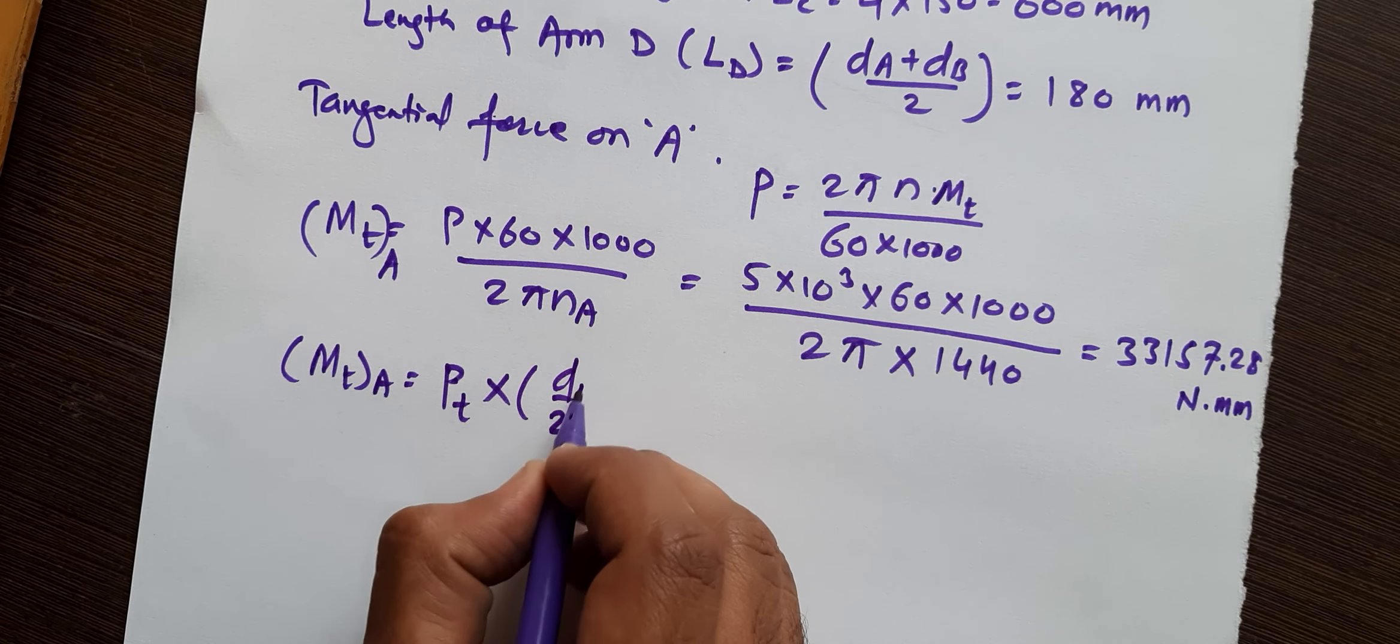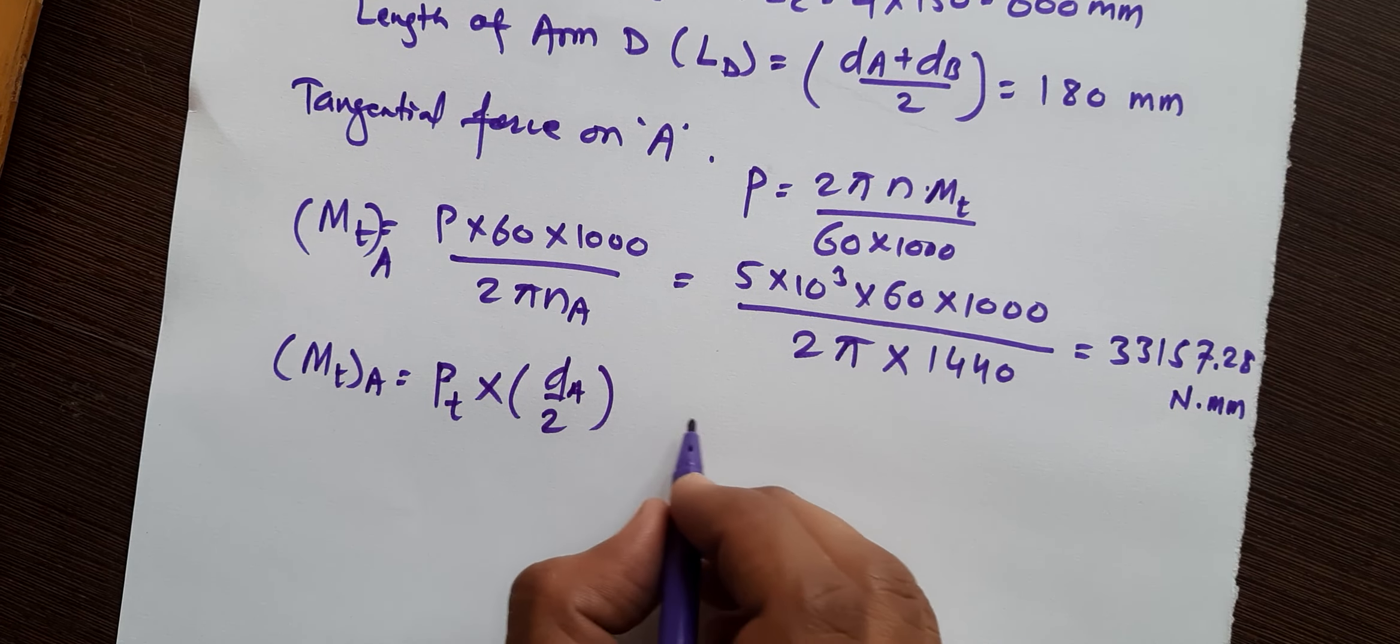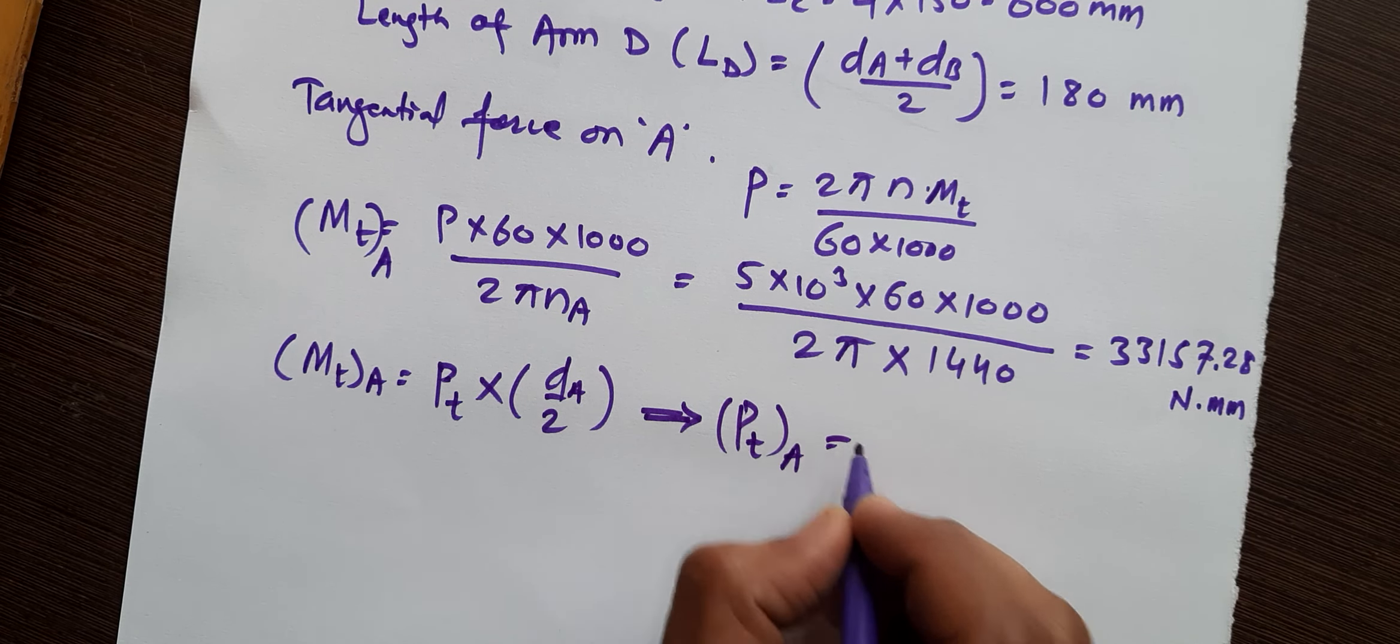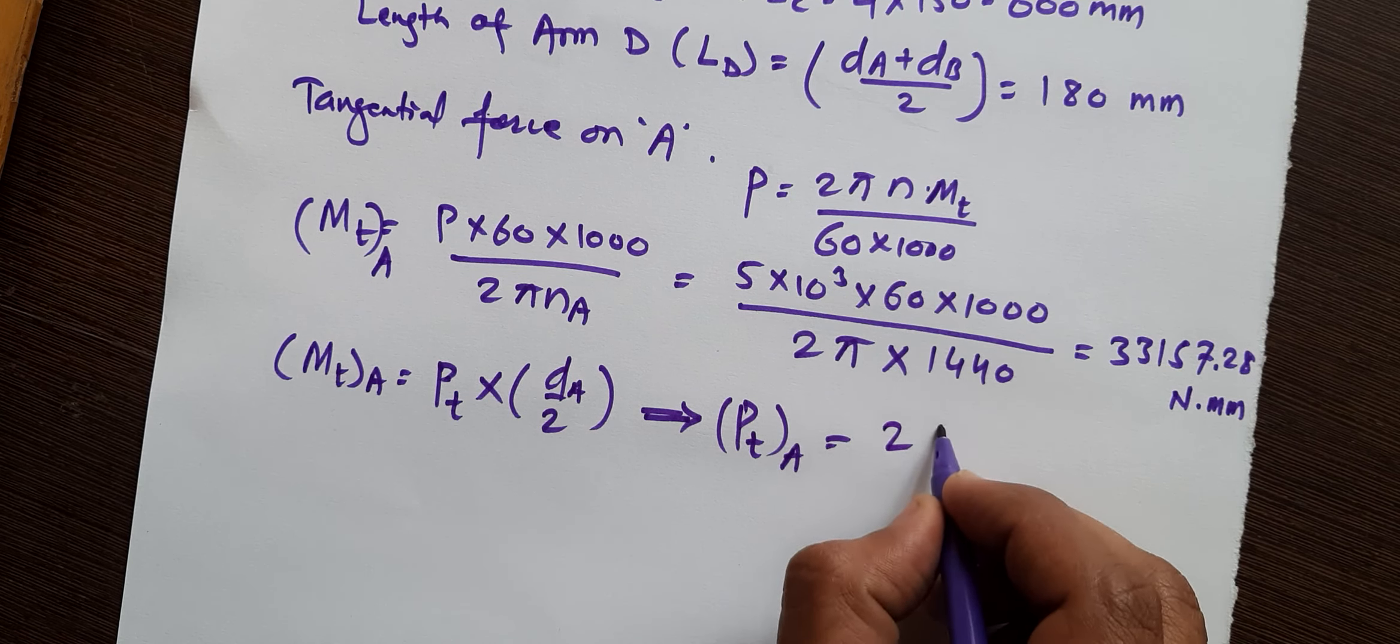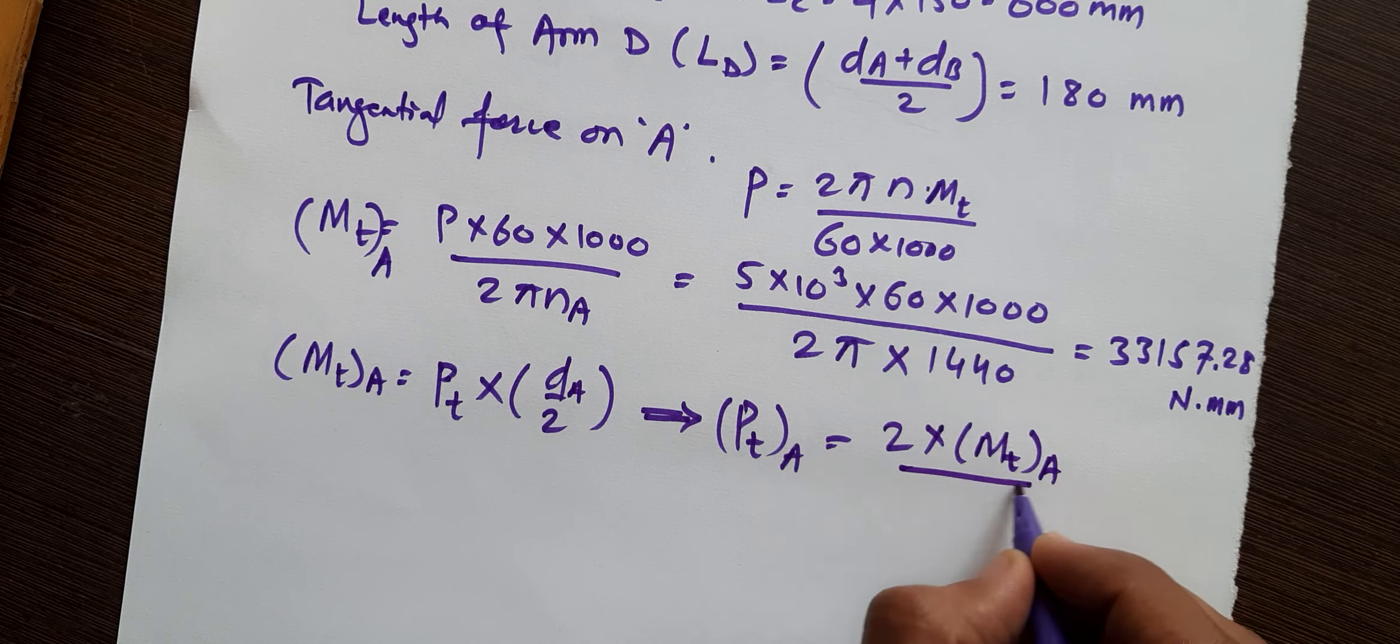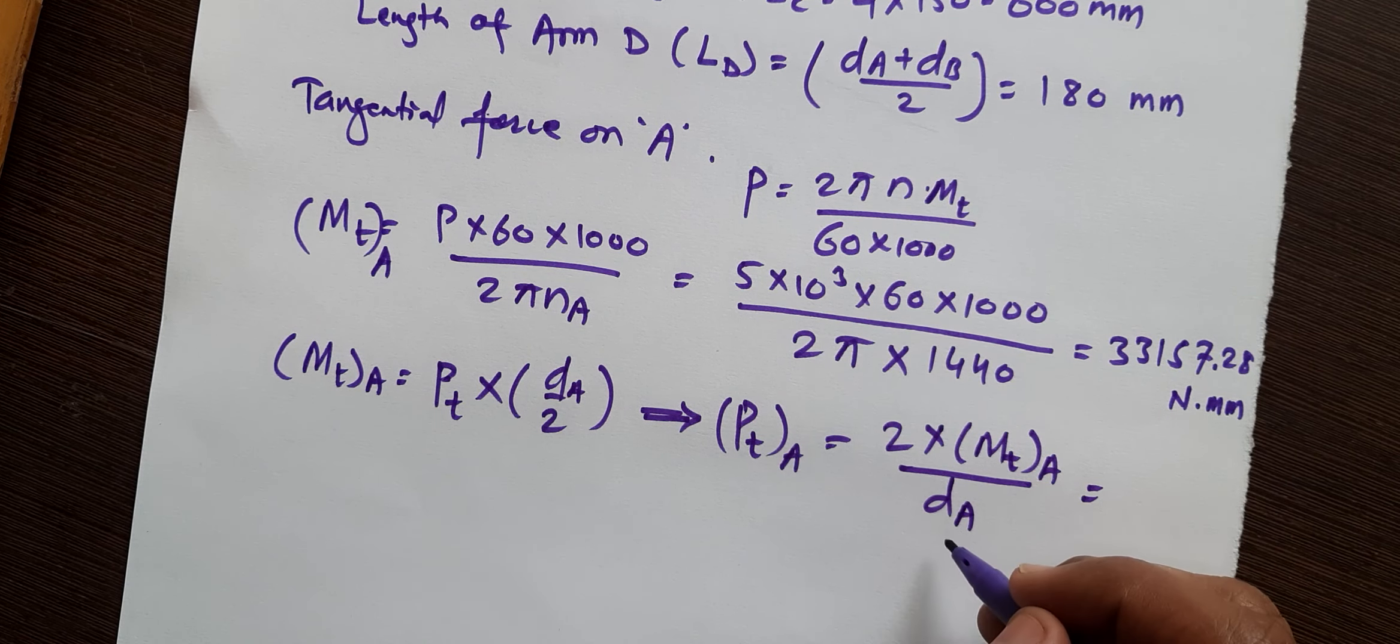2 × MTA divided by DA. Now if we substitute the value of MT here and DA here, you will get PT as 552.62 newton.